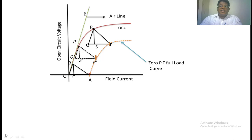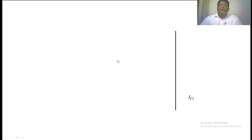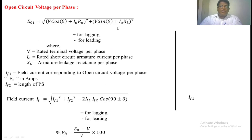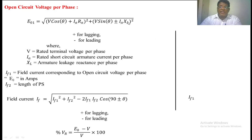We need only one quantity — the length RS — which represents the leakage reactance drop, that is IA·XL at full load. The length PS represents the field current required to overcome armature reaction at zero power factor. The length QS represents the field current required to overcome leakage reactance. Now we are going to find the voltage regulation. Using the formula: E01 = sqrt((V·cosθ + IA·RA)² + (V·sinθ + IA·XL)²). Note this uses XL — the leakage reactance drop — not XS. Suppose the length RS is measured and represents 60 V, then you take IA·XL as 60 V.